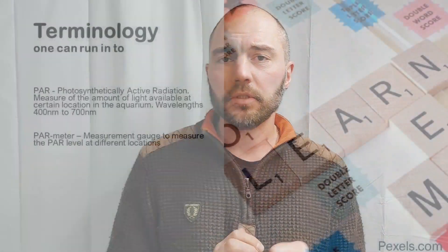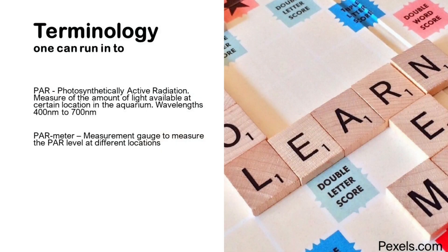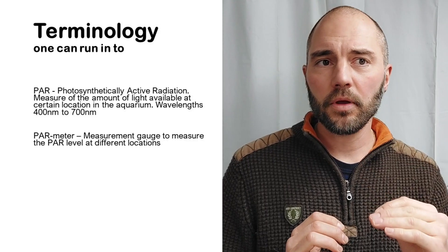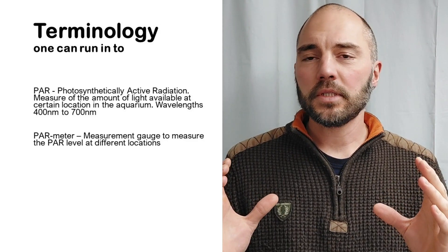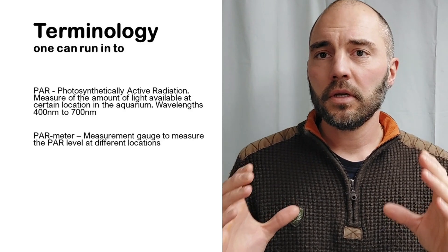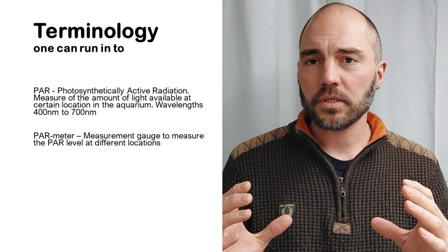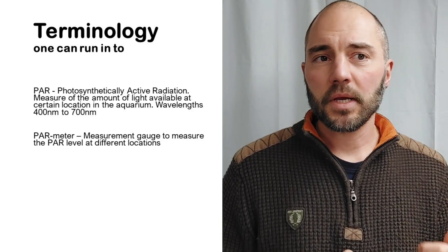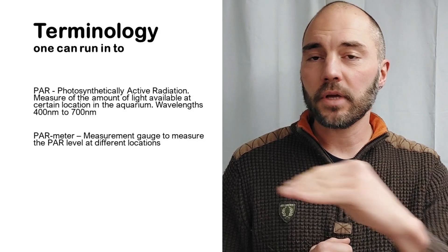I also need to introduce some terminology when discussing light. First: PAR. When you read forums and discussions there's a lot of talk about PAR. PAR stands for photosynthetically active radiation. You measure the amount of light available at a certain location or depth in the aquarium — specifically how much light in the wavelength of 400 to 700 nm there is. It measures the amount of light in the visible spectrum, using a PAR meter to gauge PAR levels at different locations in your aquarium.